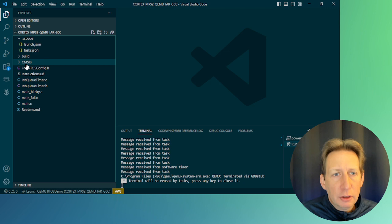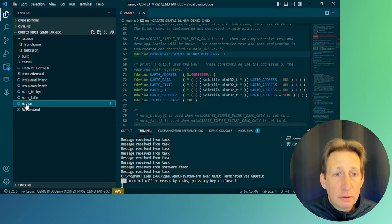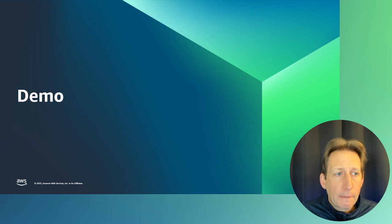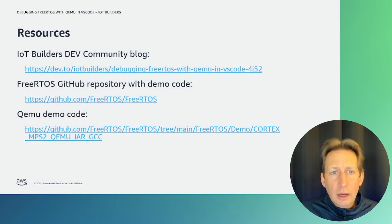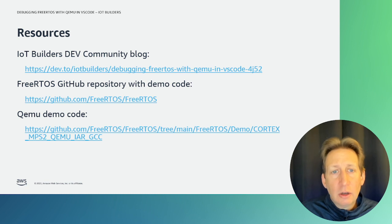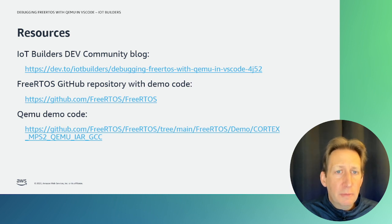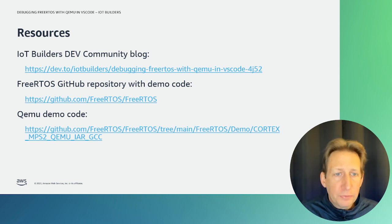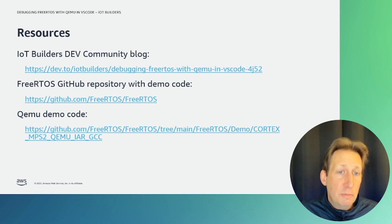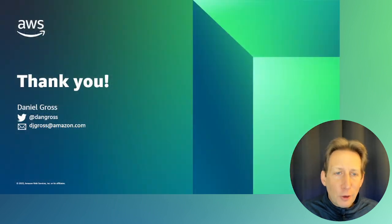To see the full application, you can check out the source code. Some resources for you: check out the IoT Builders Dev Community blog called 'Debugging FreeRTOS with QEMU in VS Code', which will give you details on this process. There's also the FreeRTOS GitHub repo with demo code, which you cloned, and the QEMU demo code under the subfolder for Cortex-MPS2, QEMU-IAR-GCC. Thanks a lot for watching, and happy debugging!